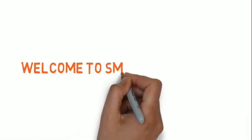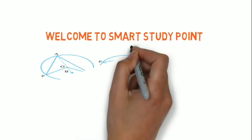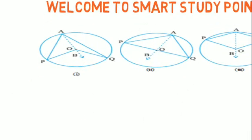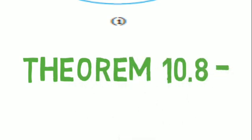Hello friends, welcome to my YouTube channel Smart Study Point. In this video, I will tell you about Theorem 10.8 of our Class 9 NCERT book. This theorem is: the angle subtended by an arc at the center is double the angle subtended by it at any part of the circle.